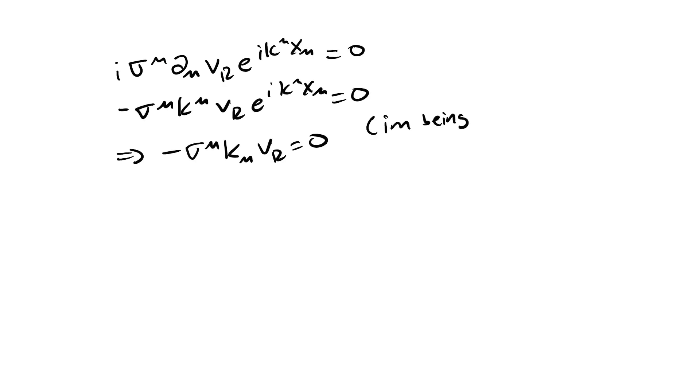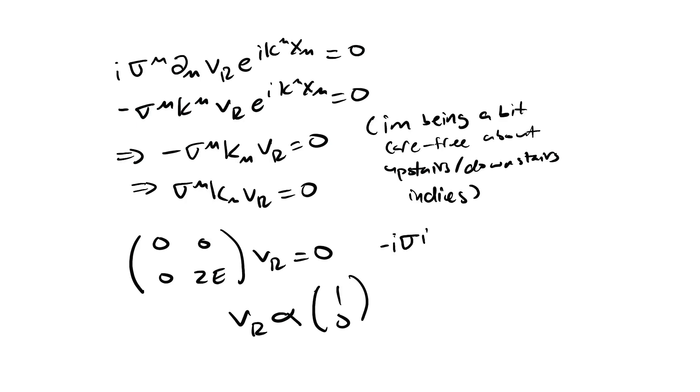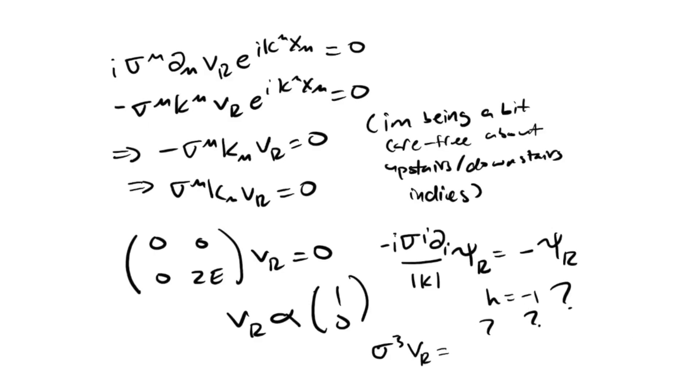Now we have to do the same thing but for antiparticles. Solving this equation, we get what seems to be the same solutions. But when we add the helicity operator on the left chiral spinor, we get positive one.